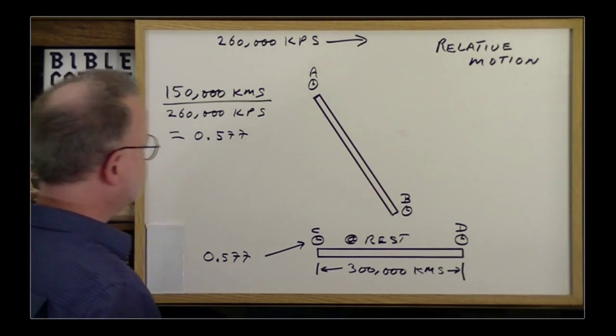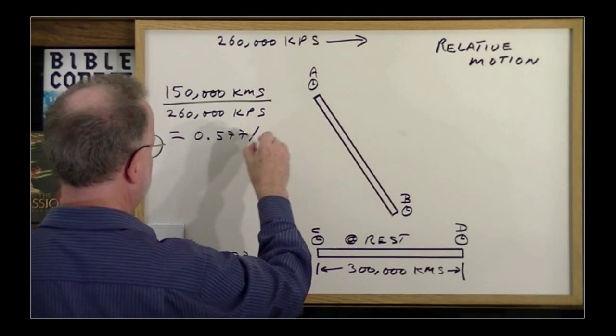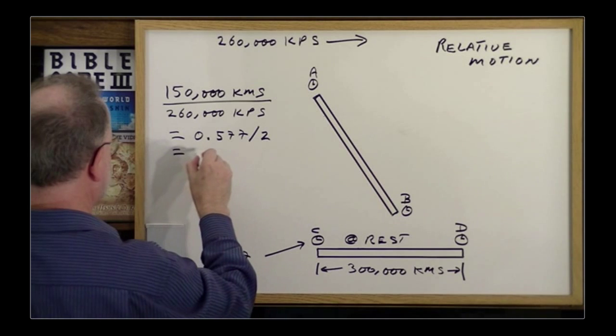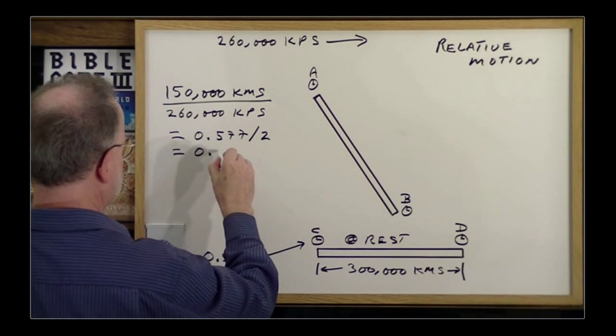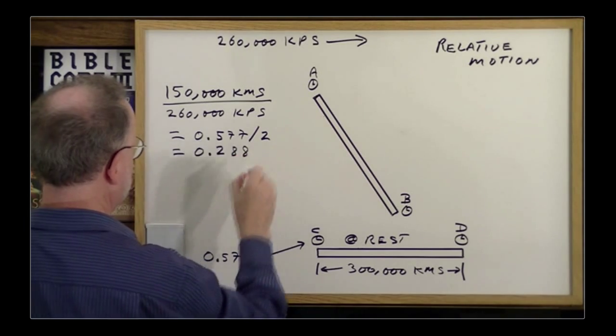However, Mr. B, as you recall, his clock is ticking at half speed, so he would measure half of that. So you divide that by 2, which equals approximately 0.288.